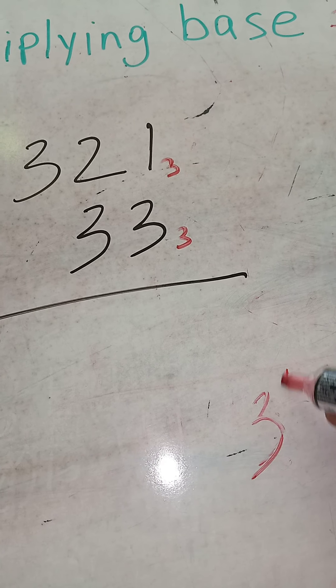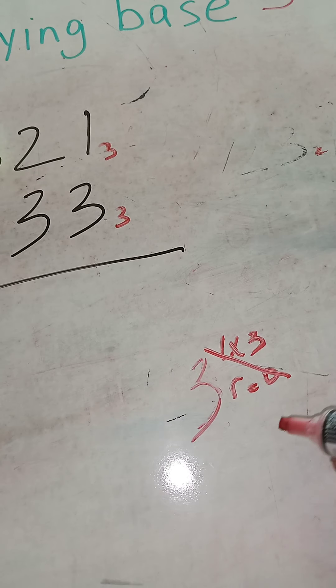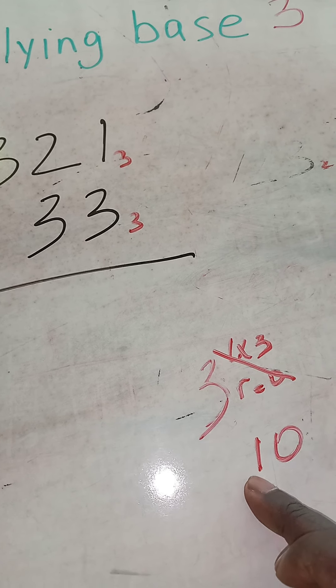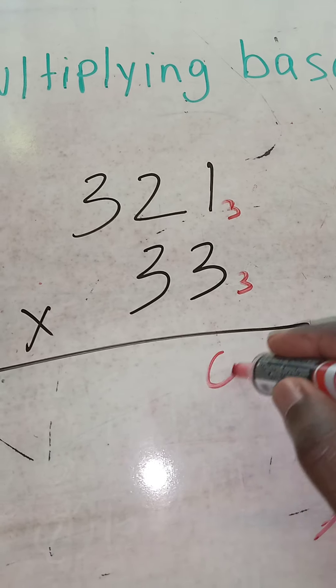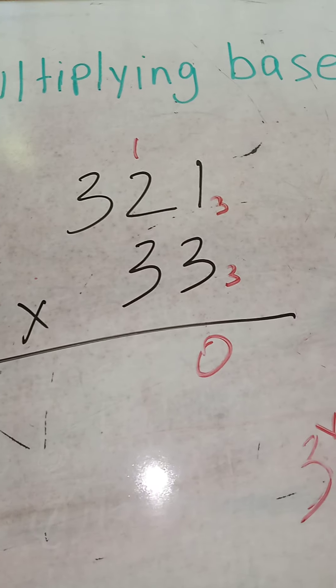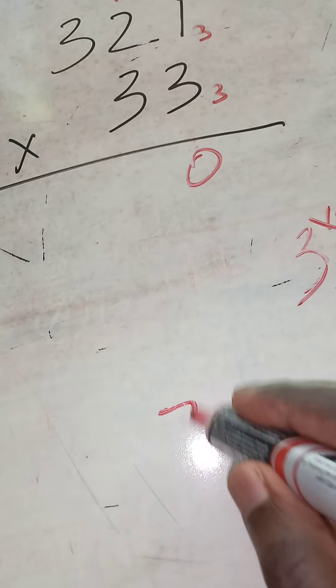Remember you can't write 3. 3 is what? 1 times 3 remainder 0, so you can only write 1-0. 1 times 3 equals 3 with no remainder. So 3 times 3 is 0-1 in base 3.